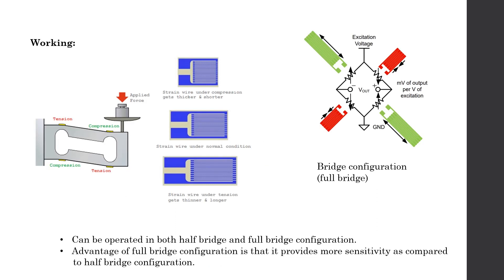The load cell that has been given to us works in the following way. The load is applied at one end of the load cell and this causes tension or compression to occur at various locations on the structure of the load cell.